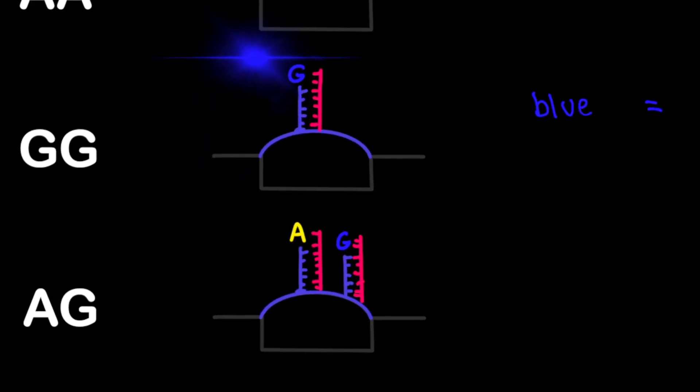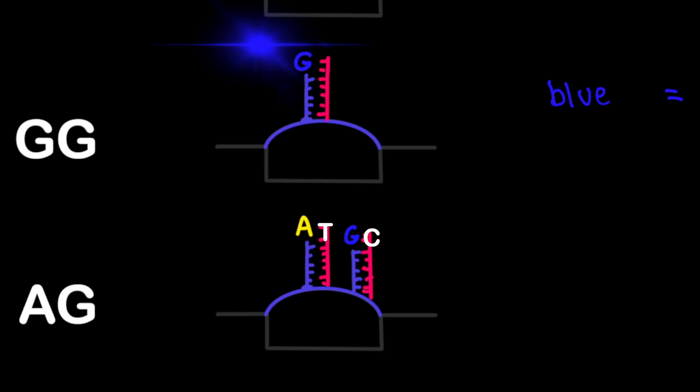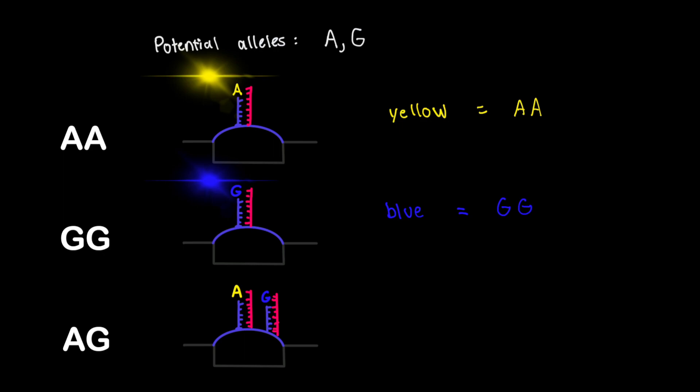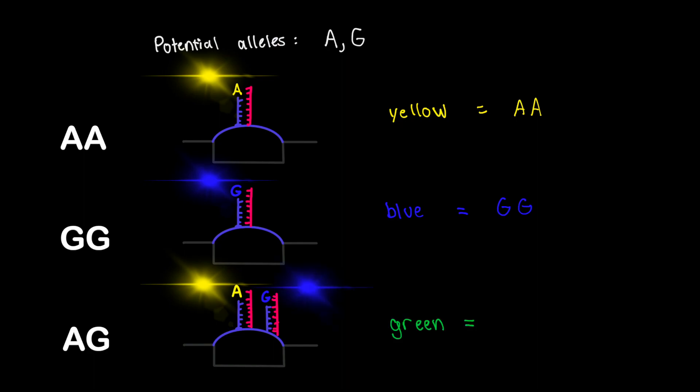In this case, roughly equal amounts of T and C at this location in the sample genome. Therefore, when the laser excites the nucleotide labels, half of the signal will be yellow and half will be blue, resulting in a green signal indicating the heterozygous genotype A-G.